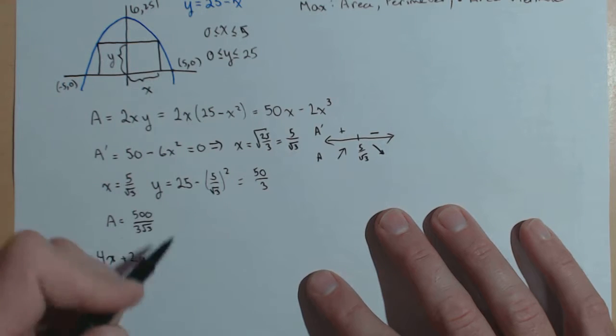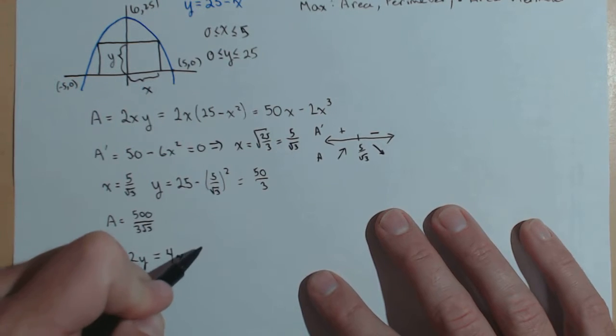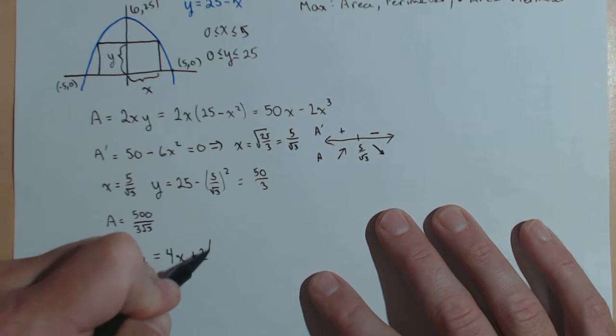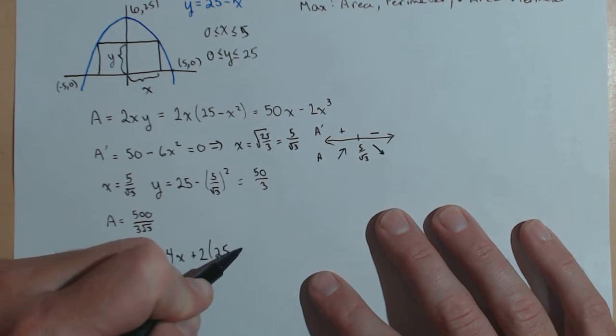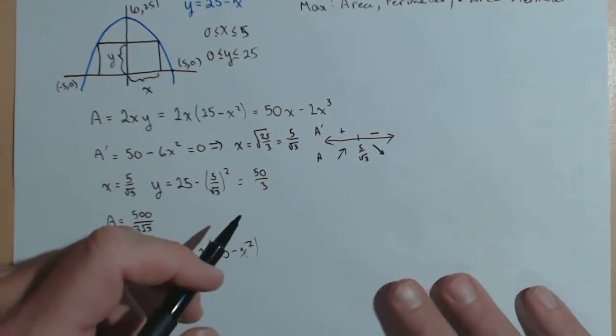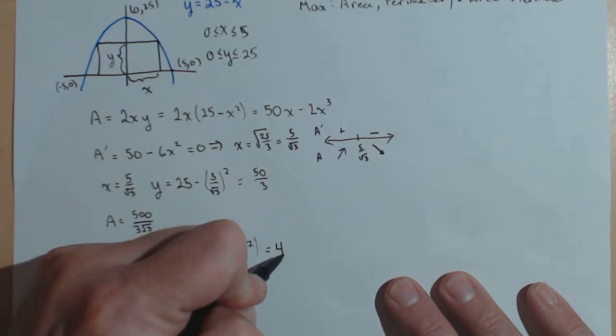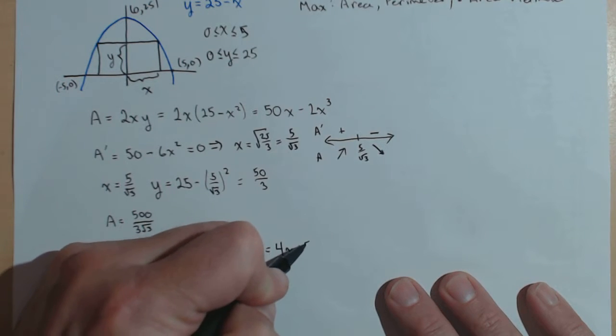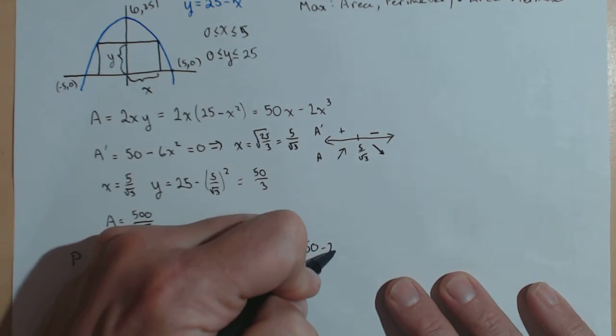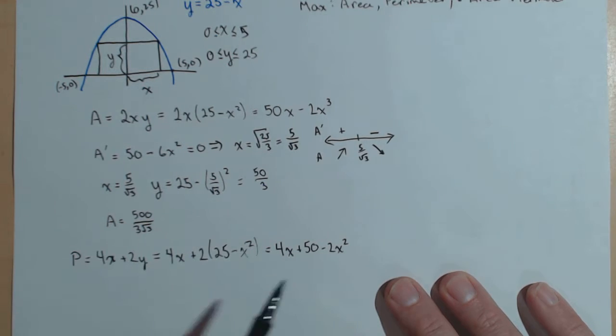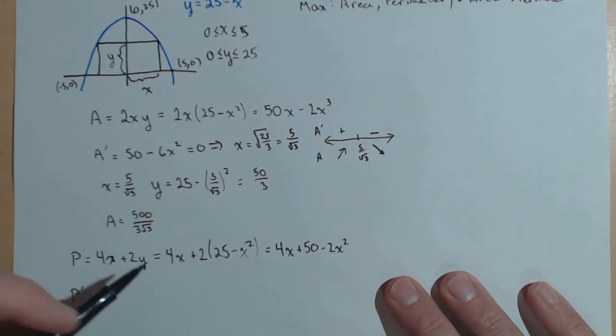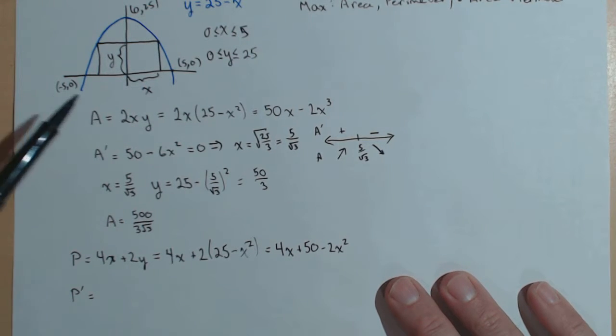Or, now again, we're going to use our constraint, so 4x plus 2 times 25 minus x squared. If I simplify this, I'm going to get 4x plus 50 minus 2x squared. And we might go ahead and write that as a regular quadratic. Not necessary for where we're heading, because we're going to take our derivative.